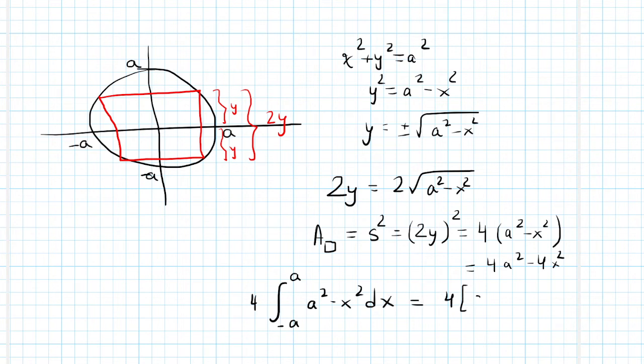Now we just take the antiderivative of A squared, which is A squared x, minus x cubed over 3. And that's going to go from negative A to A.